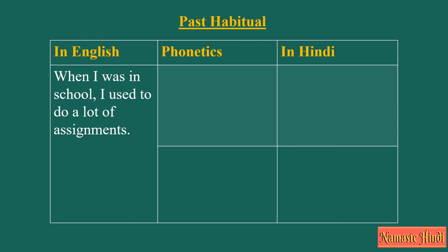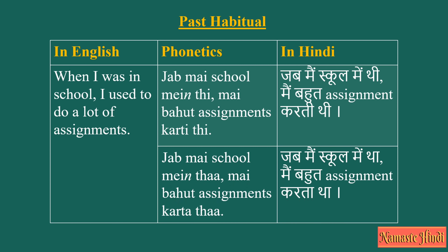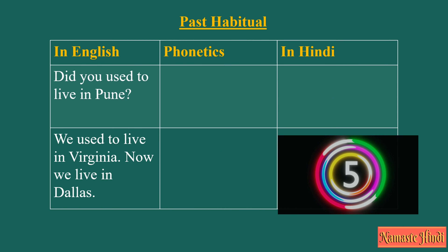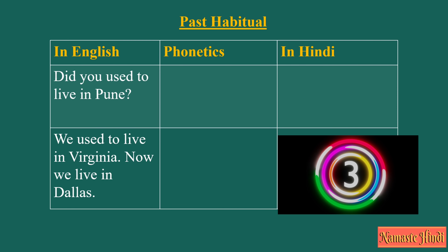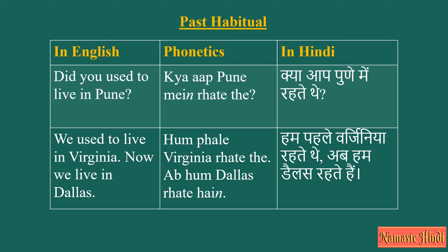When I was in school, I used to do a lot of assignments — said by a female: Jab main school mein thi, main bahut assignments karti thi. Did you used to live in Pune? — Kya aap Pune mein rehte the? We used to live in Virginia, now we live in Dallas — Hum pehle Virginia mein rehte the. Ab hum Dallas mein rehte hain. And that's all the practice for today.